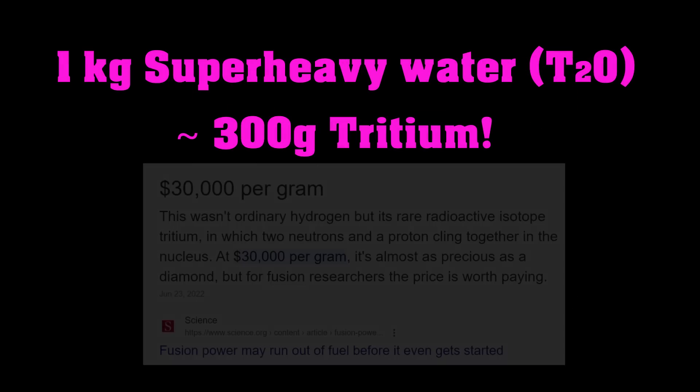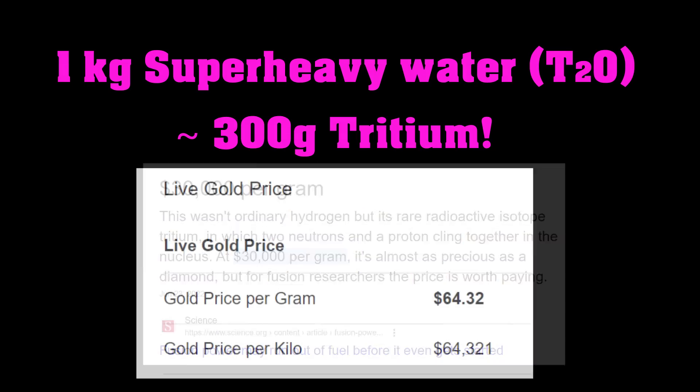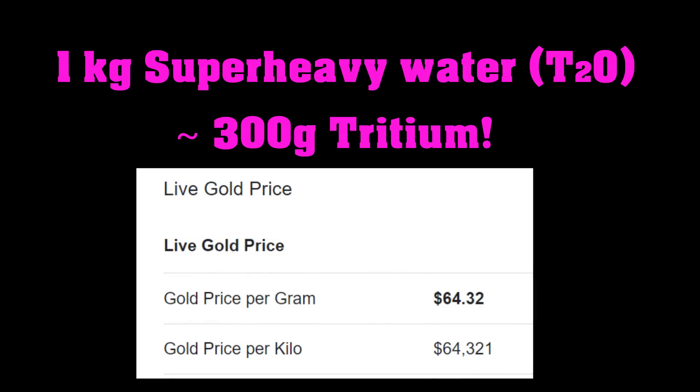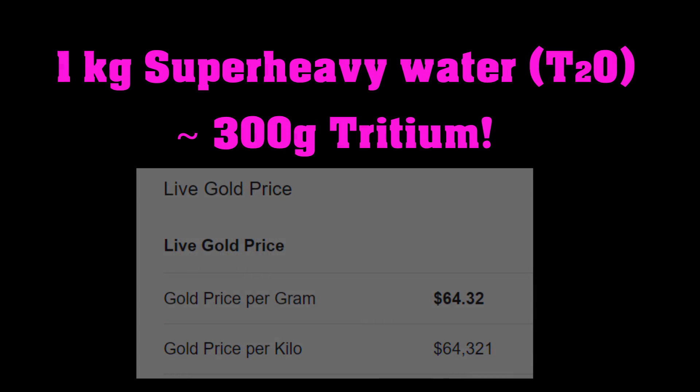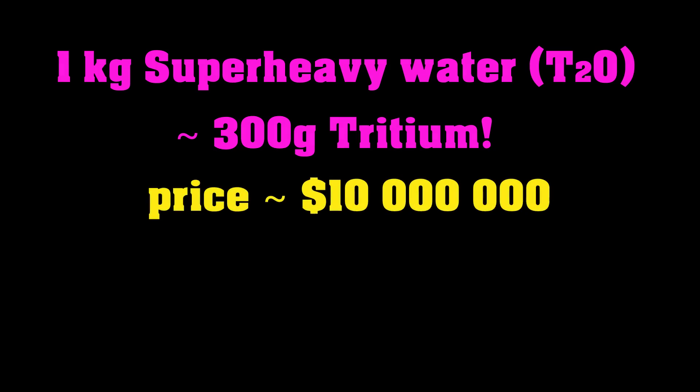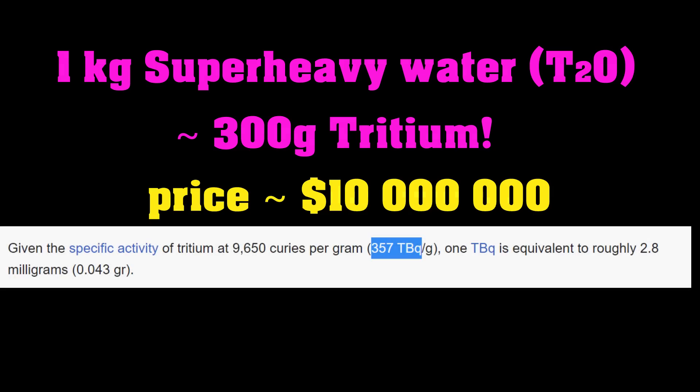One kilogram of super-heavy water contains about 300 grams of tritium. Tritium is some $30,000 per gram. Gold, for reference, is about $50 per gram, so it's about 1,000 times more expensive than gold. So, a kilogram of T2O would cost about $10 million.